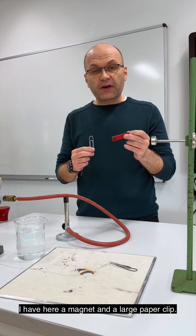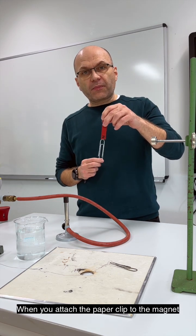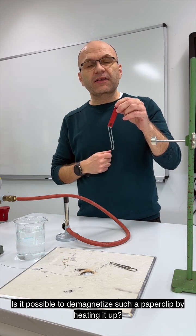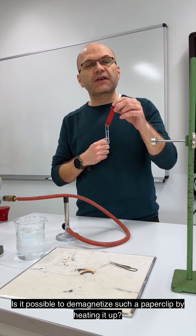I have here a magnet and a large paperclip. When you attach the paperclip to the magnet, the paperclip is magnetized. Is it possible to demagnetize such a paperclip by heating it up?